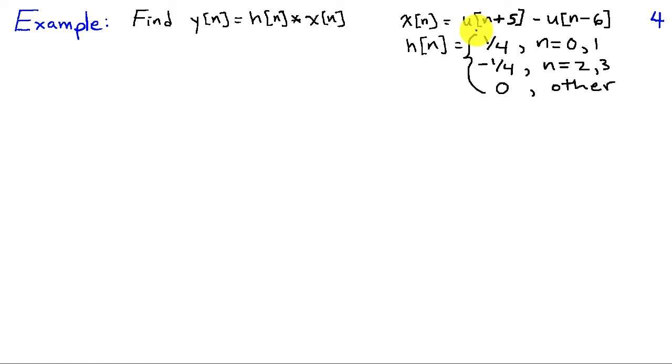x is the signal u of n plus 5 minus u of n minus 6. And these are unit step functions. So this one starts at minus 5, the signal turns on goes from 0 to 1 there. And this one starts at time 6. So I'll have 1 minus 1 at time 6 and thereafter giving me 0. So this x is a string of values of 1 between minus 5 and plus 5.